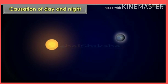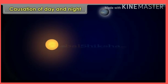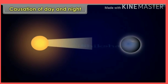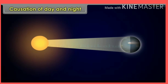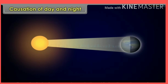Causation of day and night: The days and nights are caused due to the rotation of the earth. The earth receives light from the sun, and because of its spherical shape, only half of it gets light from the sun at a time. The portion facing the sun experiences daytime while the other portion away from the sun experiences night.